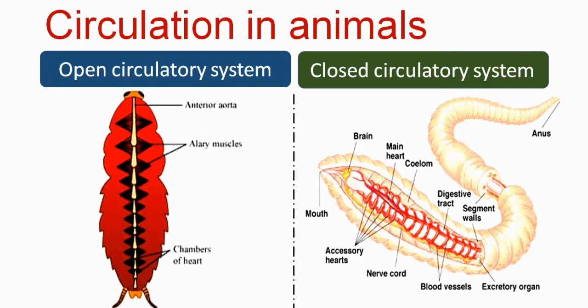William Harvey demonstrated that blood flows in a stable and continuous manner, circulating from the heart to body organs and from body organs back to the heart.